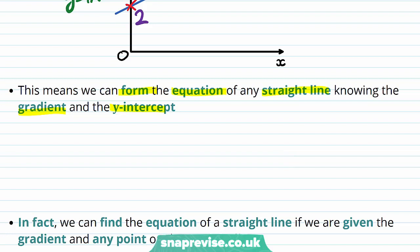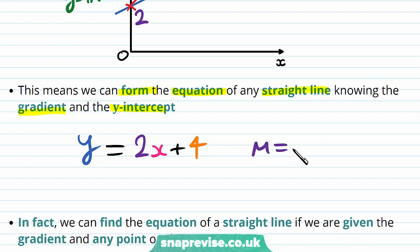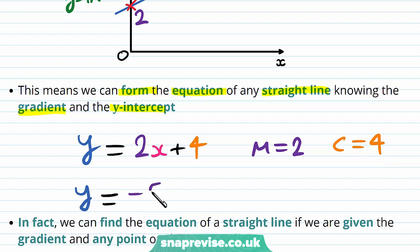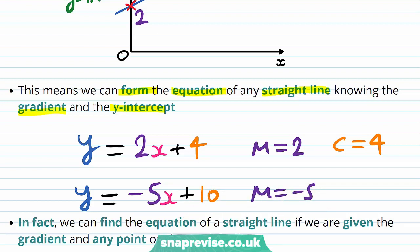As for more examples, let's say we have y is equal to 2x plus 4. This corresponds to the gradient m being equal to 2 and the y-intercept c being equal to 4. Similarly, we could have y is equal to minus 5x plus 10, which would correspond to m equals minus 5 and c is equal to 10.